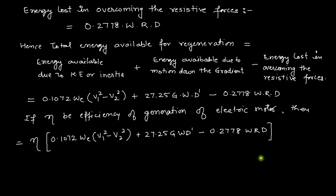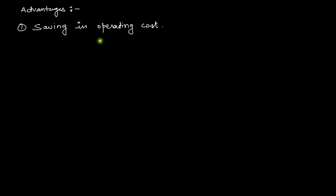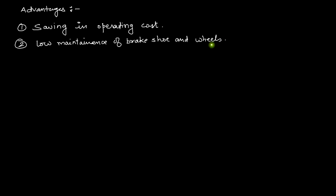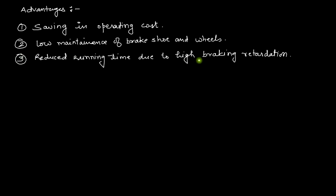Now let us discuss some advantages and disadvantages of regenerative braking. The first advantage is saving in operating cost, as some energy utilized during acceleration is returned back to the system. The second advantage is low maintenance of brake shoes and wheels, since there is low wear and tear due to regenerative braking. The third advantage is reduced running time due to high braking retardation — regenerative braking allows braking at higher speeds without wear and tear, so the train can run faster between stations.